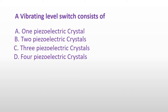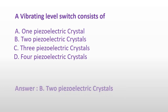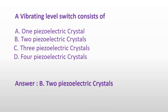A vibrating level switch consists of: Option A: One piezoelectric crystal. Option B: Two piezoelectric crystals. Option C: Three piezoelectric crystals. Or Option D: Four piezoelectric crystals. And the answer is Option B: Two piezoelectric crystals.